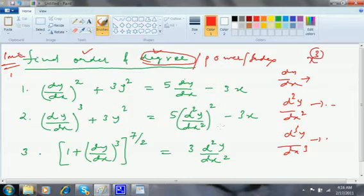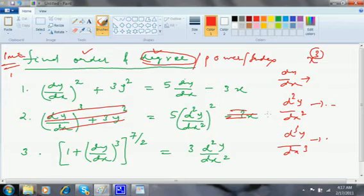First thing, I will see which is the highest order. This is differentiated second time, so I will wipe out all the rest. This d²y/dx² quantity is the order. So order is 2.